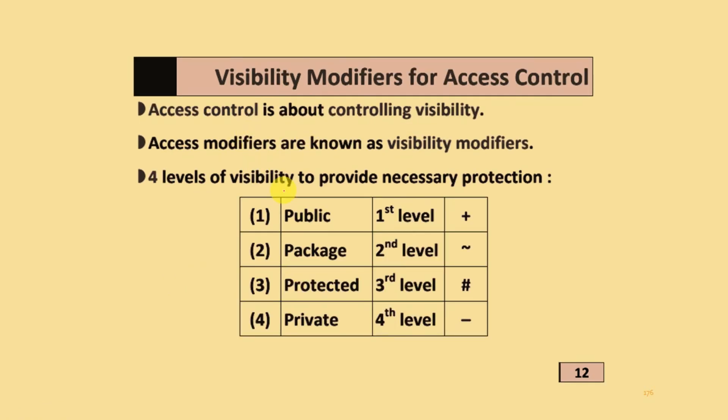Visibility modifiers for access control. Access control is about controlling visibility. Access modifiers are also known as visibility modifiers. There are four levels of visibility that provide necessary protections: first level is public defined by the plus sign, second level is package using the tilde symbol, third is protected using the hash symbol, and fourth is private using the hyphen symbol.